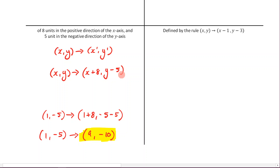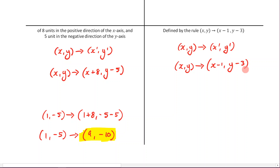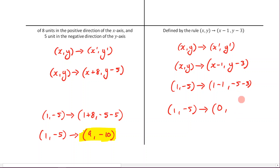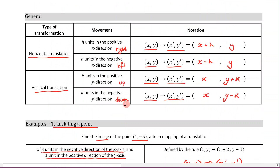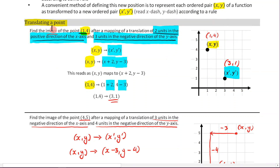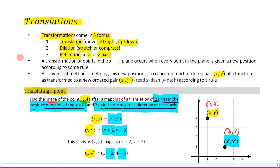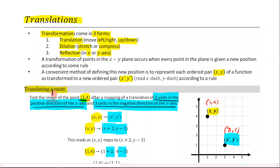For the last example, let's go through the long way. x, y maps to x dash, y dash, where x dash equals x minus 1 and y dash equals y minus 3. Our starting point is (1, -5). Substituting: 1 minus 1 equals 0, and negative 5 minus 3 equals negative 8. So our answer is (0, -8). I'm going to pause this video here, and in the next video I'll go through part 2, which is about translating not just a single point, but an entire graph. Hopefully you found this useful and have a good grasp of translating a single point — I'll see you in the next video.